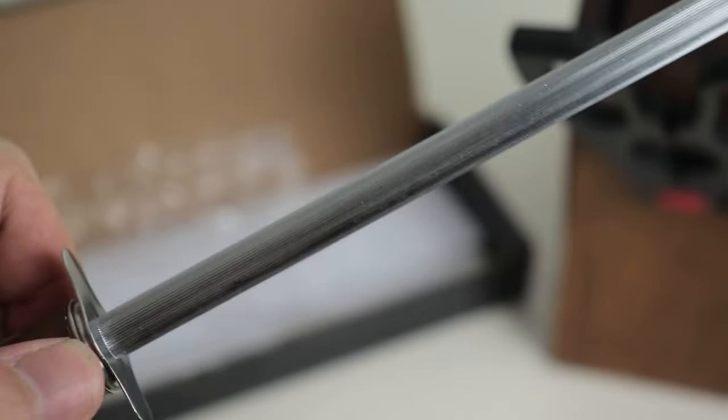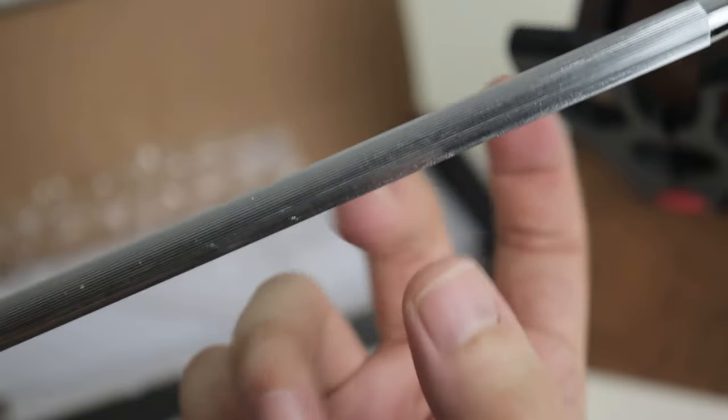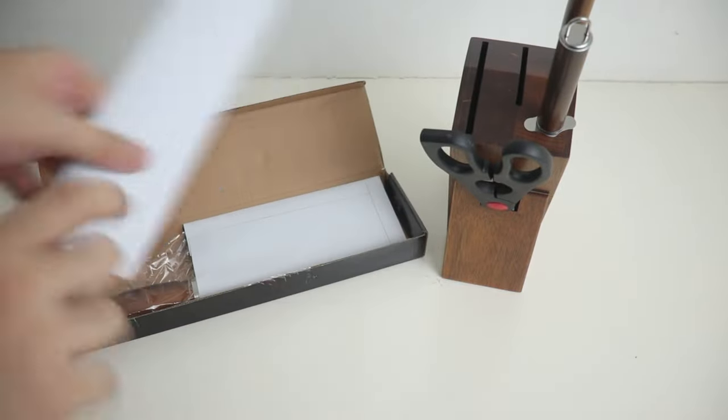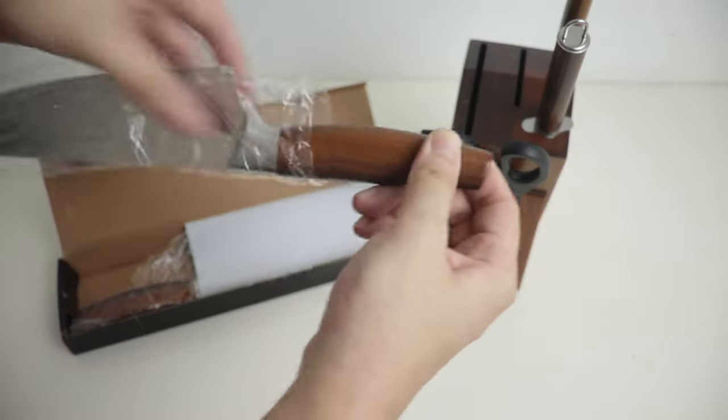As well as this honing rod, also known as the sharpening rod. Again, made of stainless steel with a nice texture. This is to keep your knife's level in terms of its sharp tip.